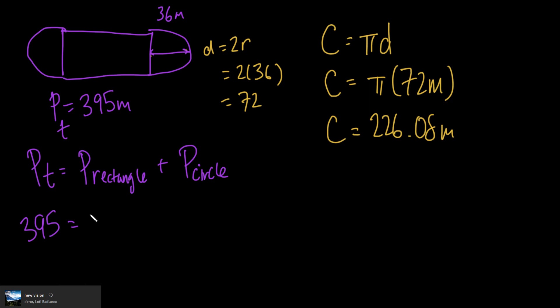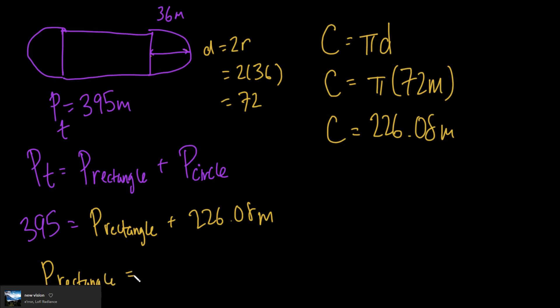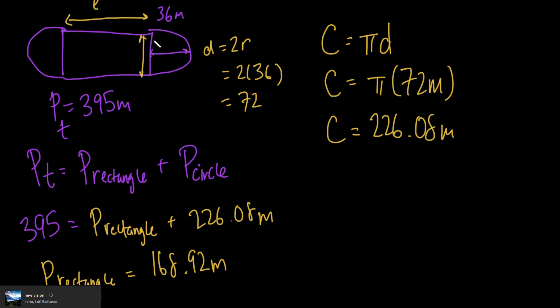So our circumference, or perimeter of the circle, is 3.14 × 72, which gives us 226.08 meters. Now we can isolate for the perimeter of the rectangle: 395 minus 226.08 equals 168.92 meters. So the perimeter of the rectangle is 168.92 meters.